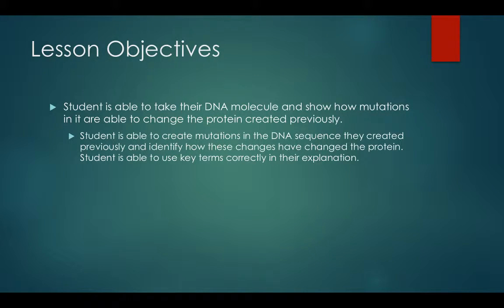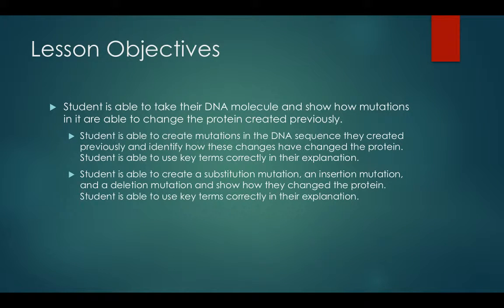To do that, you need to do a couple of things. First, you need to be able to create mutations in the DNA sequence and then show how those changes are going to affect the proteins. You'll also need to use some of the key terms in your explanation. You should be able to create a couple types of mutations: a substitution mutation, an insertion mutation, and a deletion mutation — and show how the proteins are being changed. Use the key terms the right way.